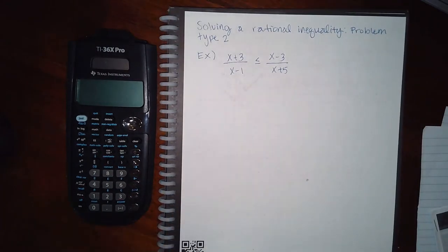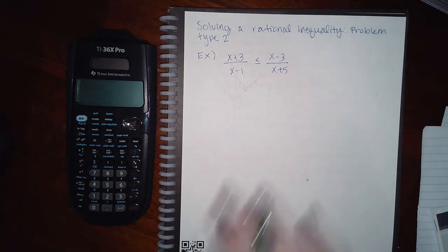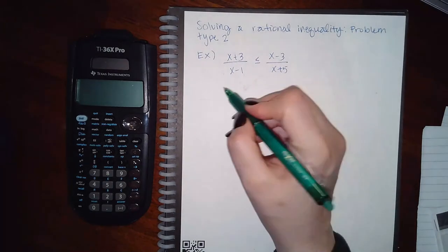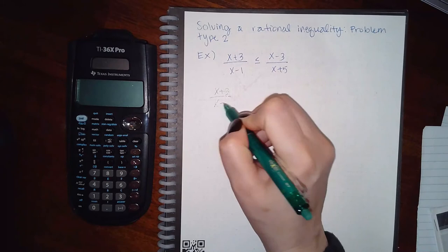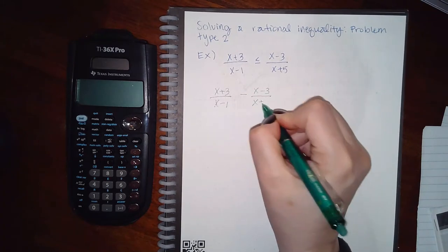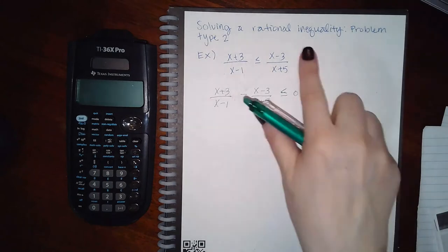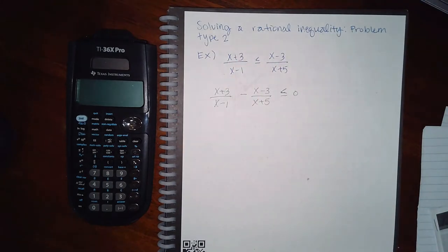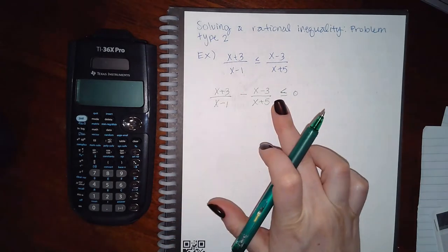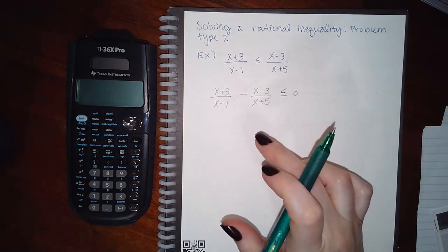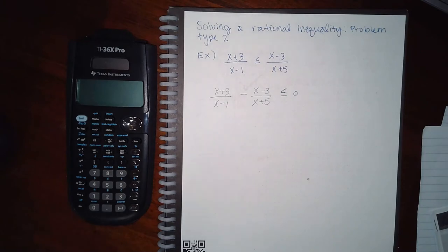Let's try one more — problem type 2. This one is different in that it doesn't have 0 already set up. Remember when we were adding and subtracting fractions — that's where this comes into play. In order to move the whole fraction over, I'm going to have to subtract it, and I end up with this statement here. Now in order to do this problem as before, this has to be one giant fraction, and currently it is not, so we need a common denominator.